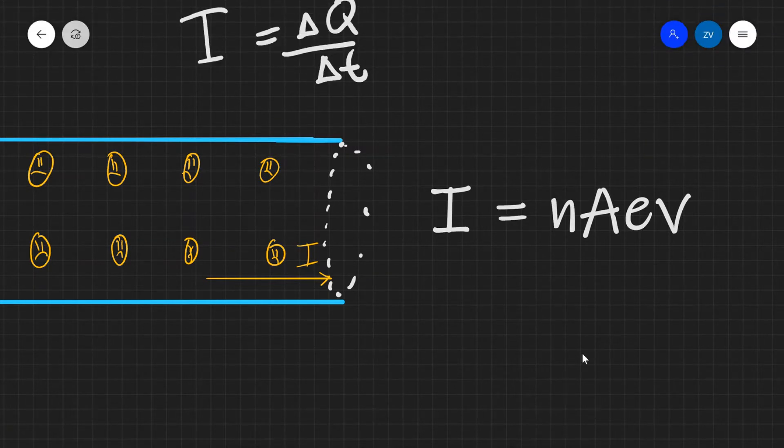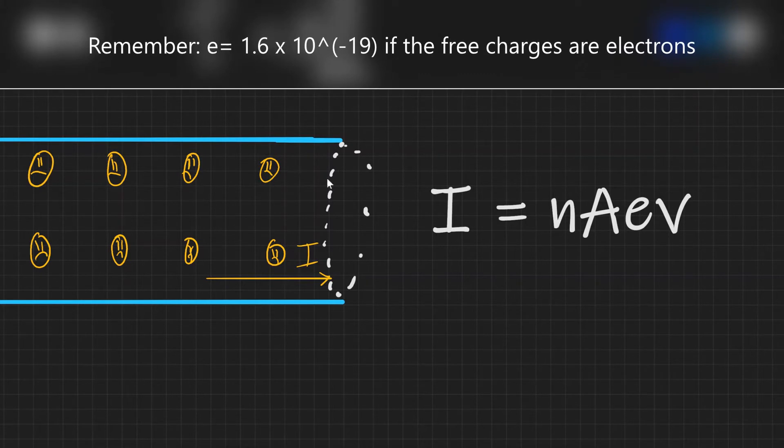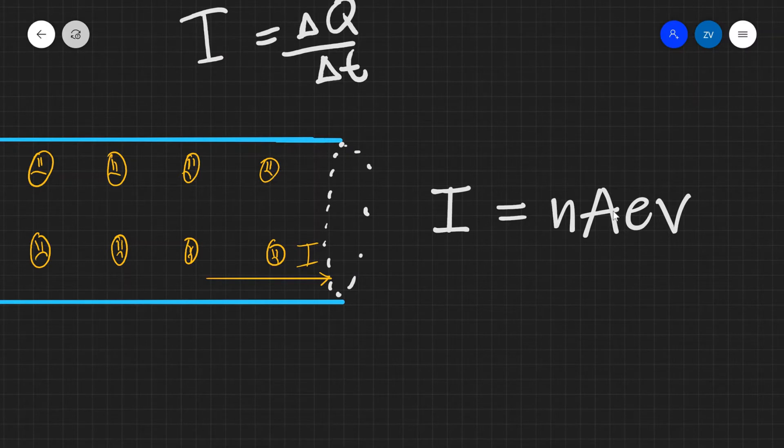The current will also depend on a number of other factors. For example the charge of those carriers. In this case those are electrons. You can see my artistic impression of an electron over here. However if there were ions with a much larger charge then the current will be naturally higher. Additionally you can see over here that we have the cross-sectional area A.